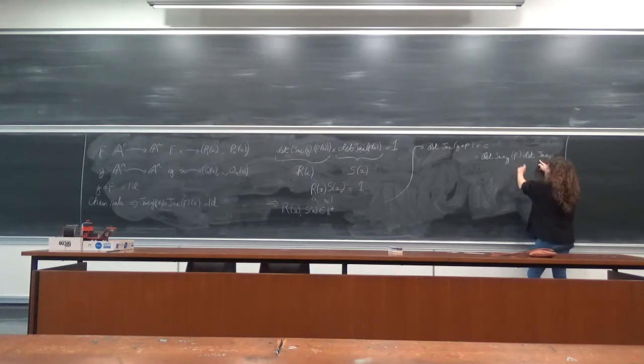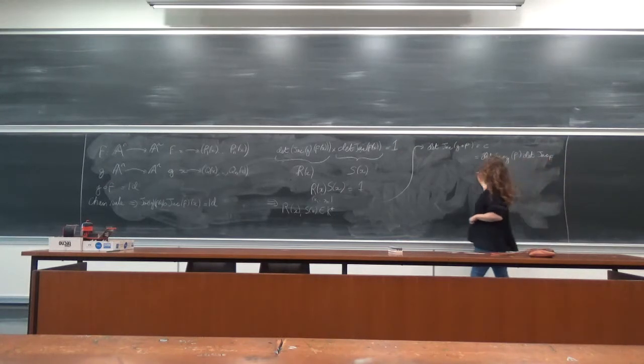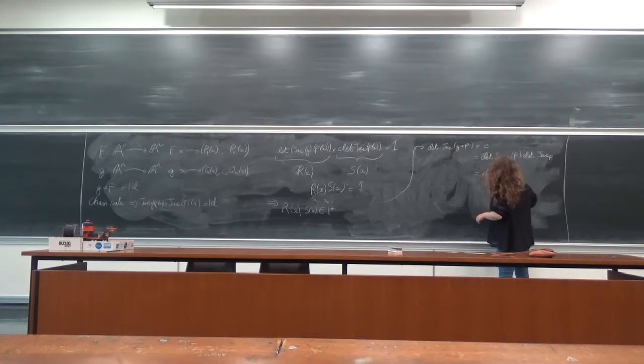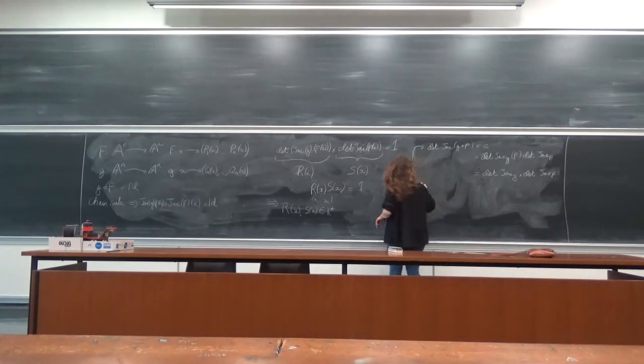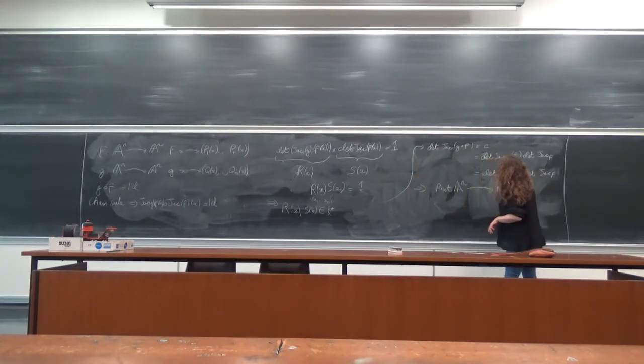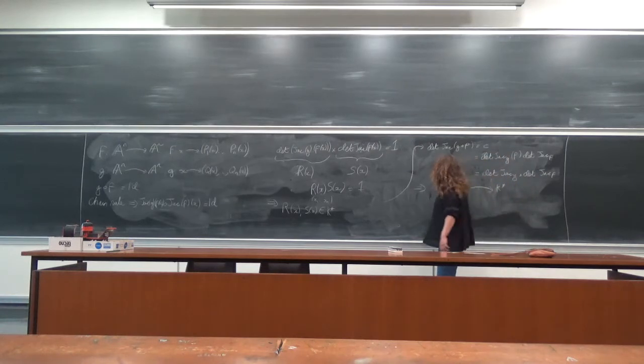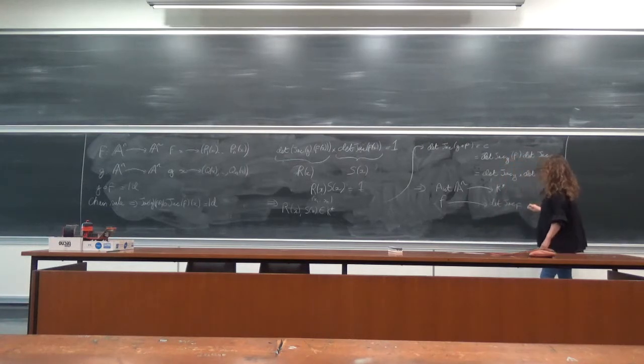The fact that I'm evaluating at f of x here and the x here changes absolutely nothing because these are constant functions. So this is the determinant of the Jacobian of g multiplied by the determinant of the Jacobian of f.